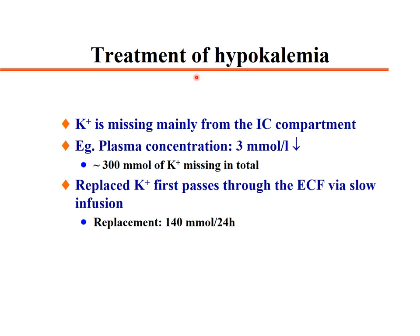Treatment of hypokalemia: potassium is missing mainly from the intracellular compartment. A plasma potassium below 3 mmol per liter means about 300 mmol of potassium is missing in total. Replacement must be done by very slow infusion since potassium enters blood first, then extracellular fluid, then intracellular fluid. About 140 mmol potassium can be safely administered per day.